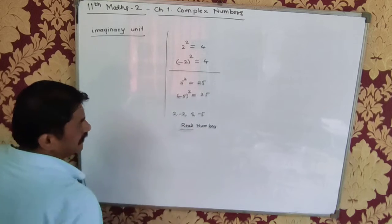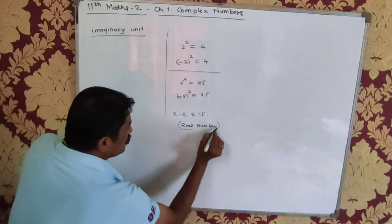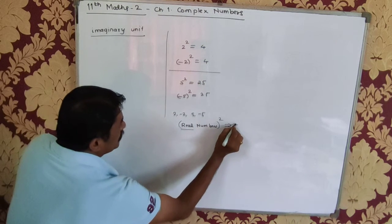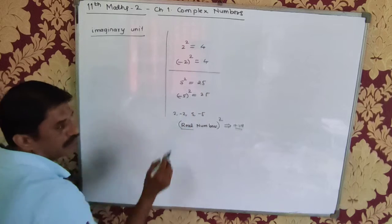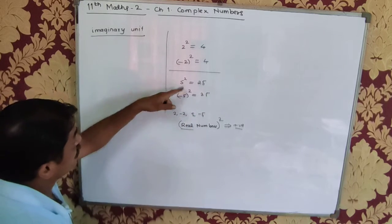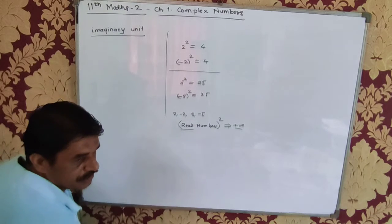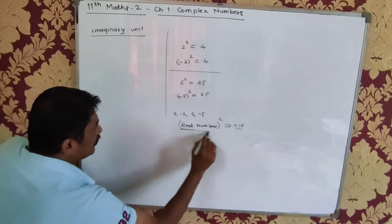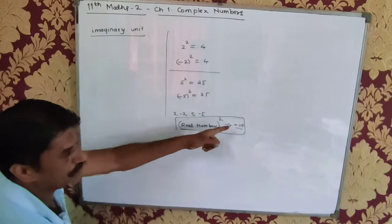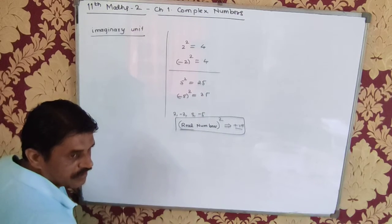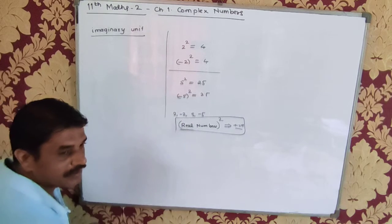They do exist in reality. That is why they are real numbers. And the square of a real number is always a positive number. Whether the real number is positive or negative, its square is always positive. This is a very unique property of the real number. So, can there be any number whose square is a negative number?